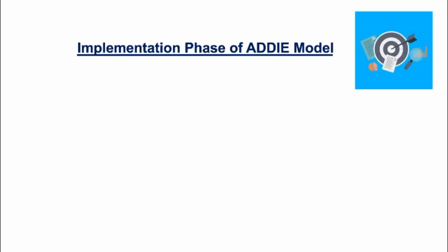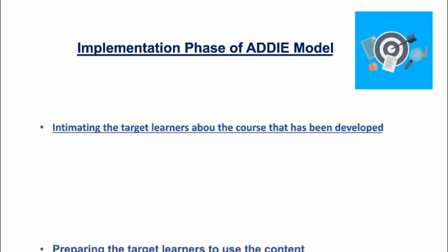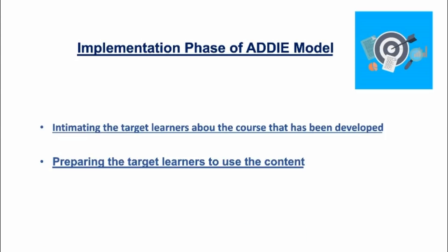The next stage of the ADDIE model is the implementation stage. In this stage the content creator is expected to do certain activities like intimating the target learners about the course that has already been developed, and preparing the target learners to use the content. Like say, if the learners are facing any kind of problem regarding the use of technology or accessing the content, the content creator can go for a little bit of hand holding wherever required.